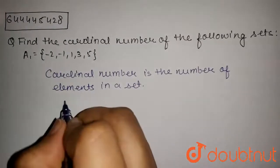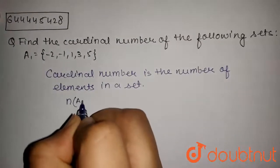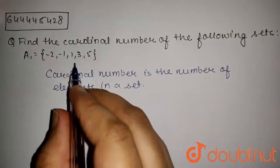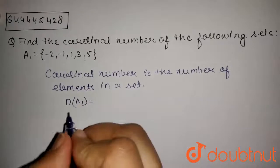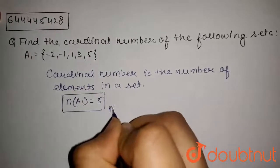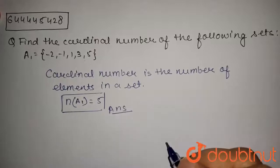It is represented by n. So cardinal number of this set will be equal to number of elements and there are 5 elements. So cardinal number will be 5. So 5 is the answer of this question.